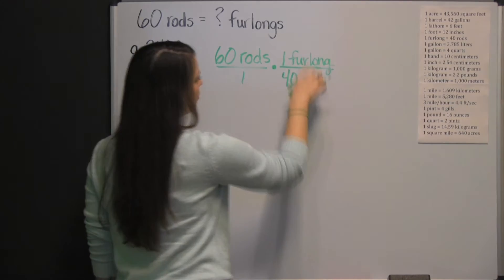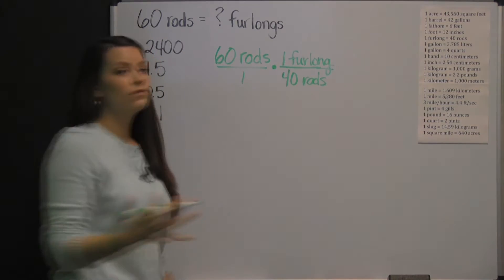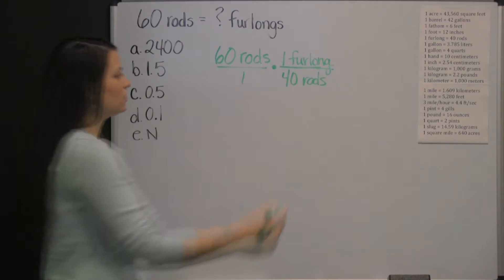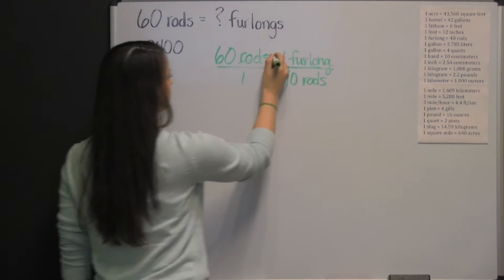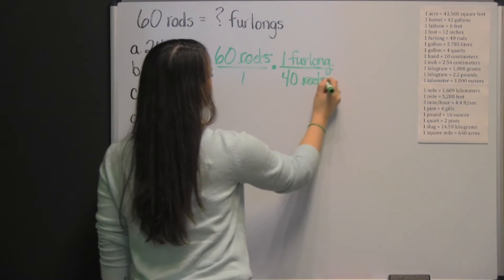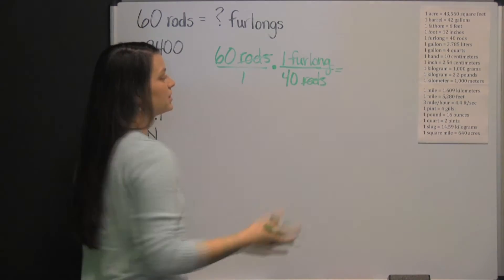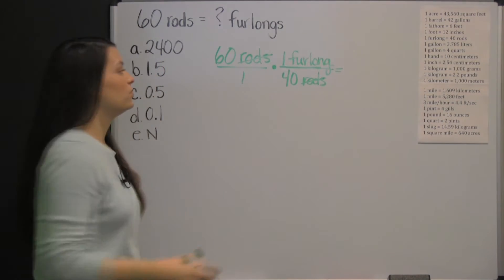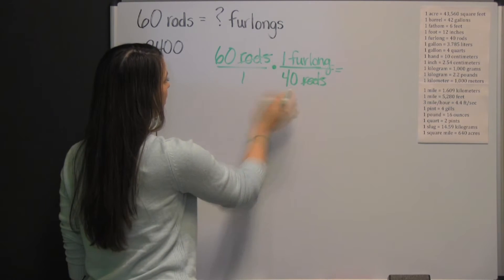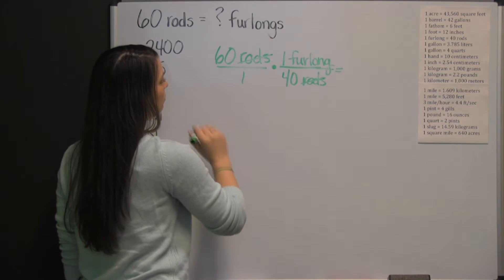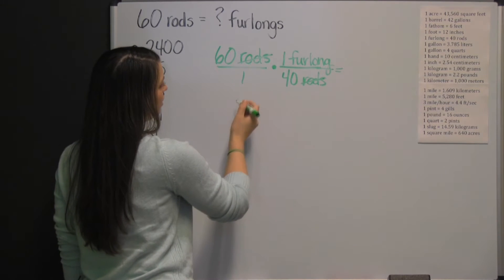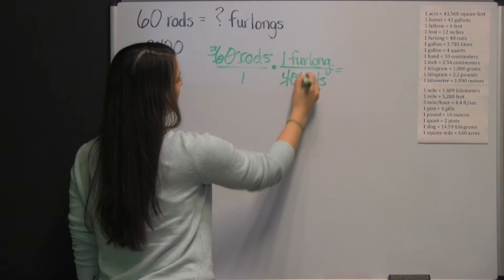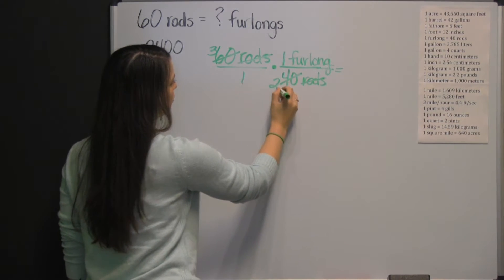This is called your conversion factor. We're multiplying fractions, so we cross-cancel the rods. You can also cross-cancel to simplify by dividing numerator and denominator both by 20. So, 60 divided by 20 is 3, and 40 divided by 20 is 2.